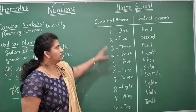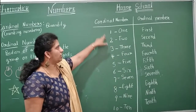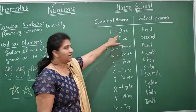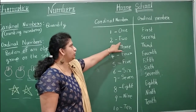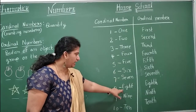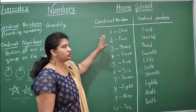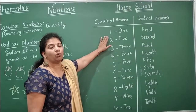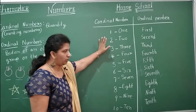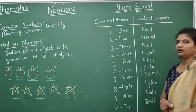Look here children. Your cardinal numbers can be written as 1, 2, 3, 4, 5, 6, 7, 8, 9, 10. Cardinal numbers show the quantity.